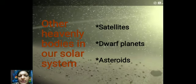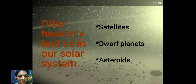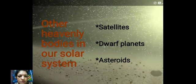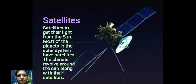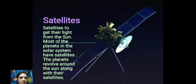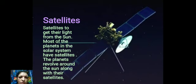Which are the other heavenly bodies in our solar system besides stars and planets? Satellites, dwarf planets, and asteroids. You can see in this picture a satellite. Satellites get their light from the Sun because they are in space.